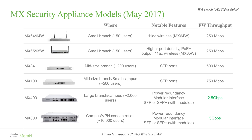The difference between MX84 and MX100 is the throughput and number of users they can handle. For large branches or campus deployments, you can utilize the MX400 and MX600, which offer higher throughput and can handle more users. All the models run the same firmware, so all the features we're going to talk about today can be applied to any of these boxes. Also, 3G and 4G failover is available on all models, from the MX64 all the way to the MX600.